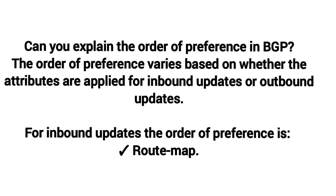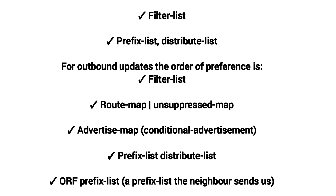Can you explain the order of preference in BGP? The order of preference varies based on whether the attributes are applied for inbound or outbound updates. For inbound updates, the order is: route map, filter list, prefix list, distribute list. For outbound updates, the order is: filter list, route map, unsuppressed map, advertise map, conditional advertisement, prefix list, distribute list.